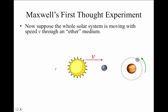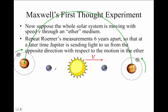Maxwell proposed a change on this measurement where he now supposed that the Sun and the entire solar system is moving at a speed v through the ether. If we repeat Roemer's measurements now not just six months apart, but also six years apart, so that at a later time Jupiter is sending light to us from the opposite directions, from over here over to Earth, or over here over to Earth.